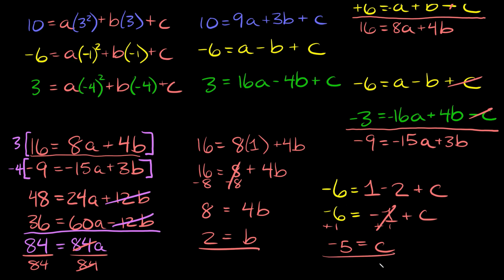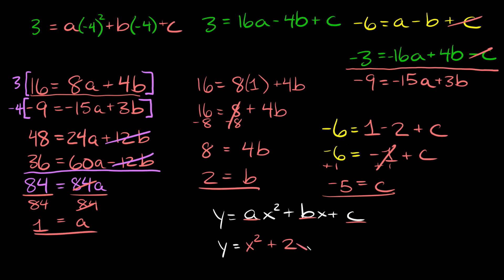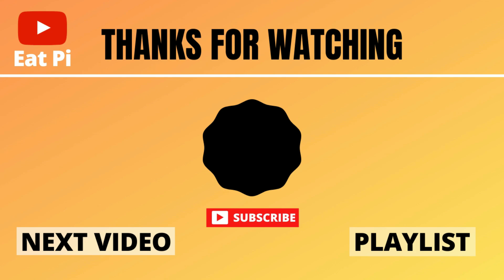Now we know all three variables: a = 1, b = 2, c = -5. Plugging these back into the standard form equation y = ax² + bx + c, we get y = x² + 2x - 5. That's your equation for the parabola passing through those three original points. If you found the video helpful, leave a thumbs up, and if you have questions or want to see other examples, let me know in the comments.